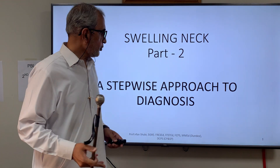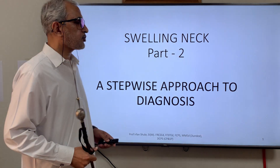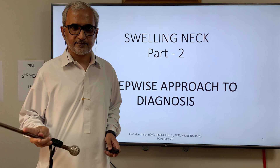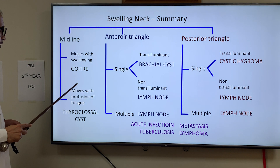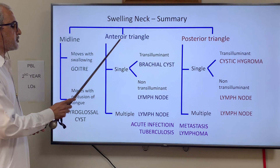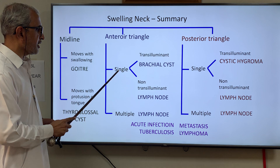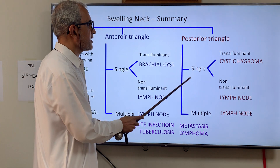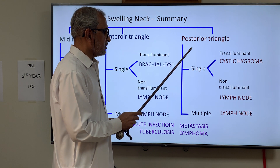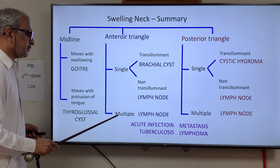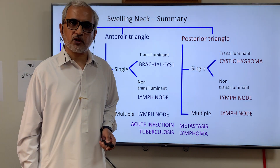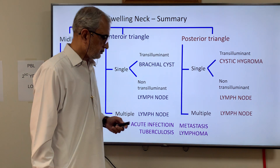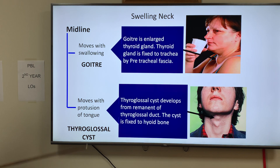Good morning, we are continuing the stepwise approach to diagnosis and we are talking about swelling of the neck, Part 2. To recall: midline swelling that moves with swallowing is a goiter; swelling that moves with protrusion of the tongue is a thyroglossal cyst; anterior triangle single cystic is a branchial cyst; single solid is a lymph node. Posterior triangle single cystic is cystic hygroma; single solid is a lymph node. Multiple lymph nodes in anterior or posterior triangle could be due to acute infections, metastasis, tuberculosis, lymphoma, and sarcoidosis, especially in Western countries.